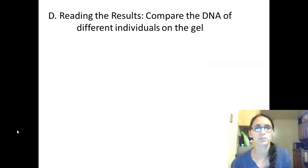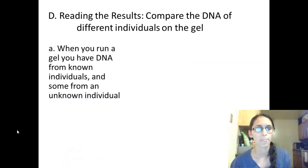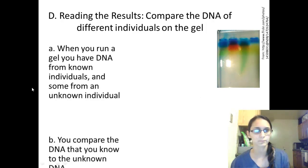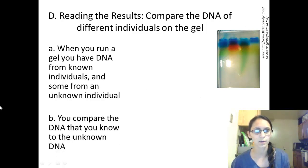Reading the results. We then compare the DNA of different individuals on the gel. When you run a gel, you have DNA from known individuals and some from an unknown individual. Here's a picture of a gel, like the ones we made in class. You can compare the DNA that you know to the unknown DNA.